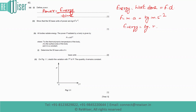So energy will have units of kg·m²·s⁻². Since power equals energy per unit time, power equals kg·m²·s⁻² divided by s, giving kg·m²·s⁻³, which matches what is written in the question.